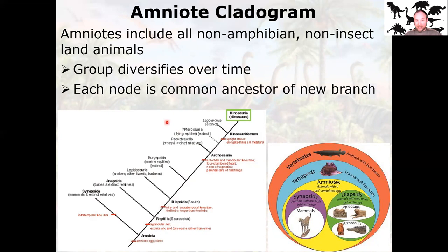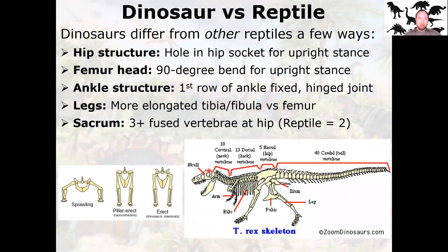Pterosaurs filled their niche just as well as dinosaurs filled theirs — in many ways pterosaurs are cooler than dinosaurs. Position on the tree doesn't really matter in that way. Evolution is not progressive, it's not directional, although it does only go one way. Once you're extinct, you're gone forever. But it's not trying to evolve towards dinosaurs or towards humans — it just sort of happened that way.